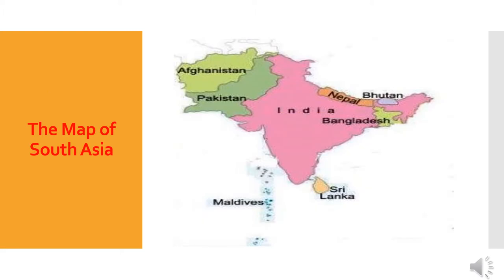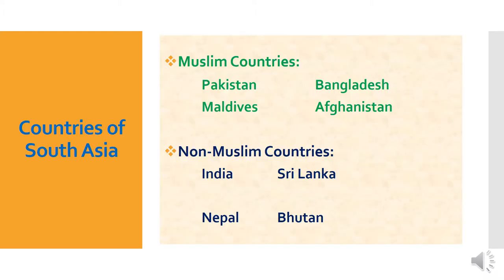This is the map of South Asia. South Asia includes Pakistan, Afghanistan, Bangladesh, Maldives, India, Sri Lanka, Nepal, and Bhutan. Among the countries of South Asia, Pakistan, Afghanistan, Bangladesh, and Maldives are the four Muslim countries. The remaining four countries — India, Sri Lanka, Nepal, and Bhutan — are the non-Muslim countries.